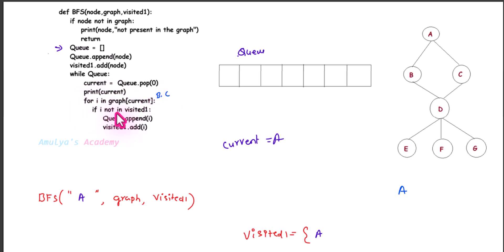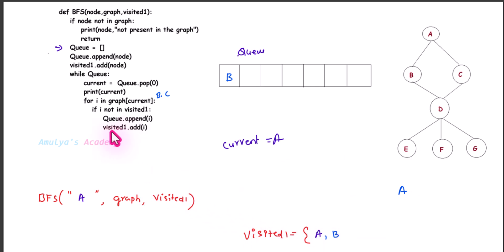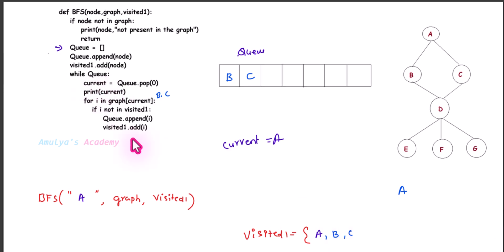Initially i is 'b'. We check if i not in visited_one — 'b' is not present in visited_one, so the condition is true. q.append(i) — 'b' is added to the list. visited_one.add(i) — 'b' is marked as visited. Control goes back to the for loop and now i becomes 'c'. 'c' is not in visited_one, so the condition is true. q.append(i) — 'c' is appended to q. visited_one.add(i) — 'c' is marked as visited. Node 'a' has only two adjacent nodes b and c, so we are done with this iteration.